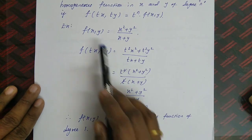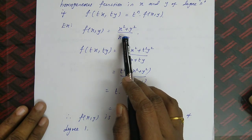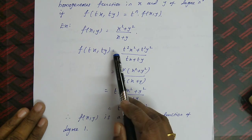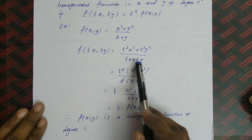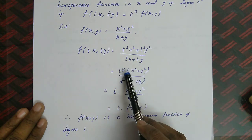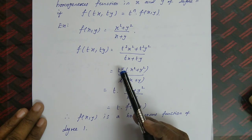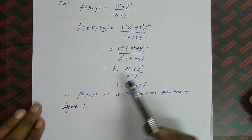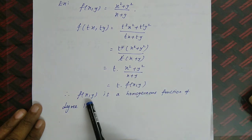For example, f(x, y) = (x² + y²)/(x + y). To check homogeneity, replace x with tx and y with ty, giving (t²x² + t²y²)/(tx + ty). Taking t² common from the numerator and t from the denominator, we cancel and get t · (x² + y²)/(x + y), which equals t · f(x, y). So f(x, y) is a homogeneous function of degree 1.